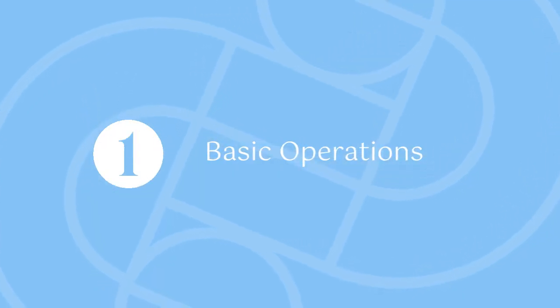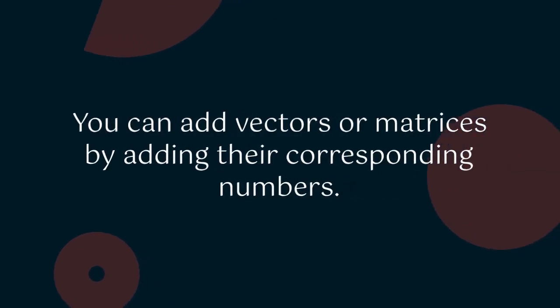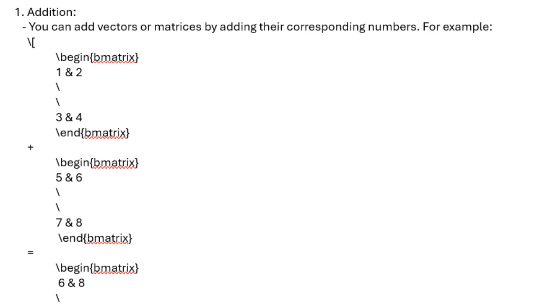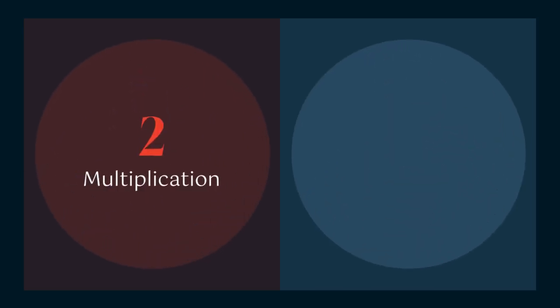Basic operations: 1. Addition. You can add vectors or matrices by adding their corresponding numbers. For example, from this picture we see how the addition operation works.